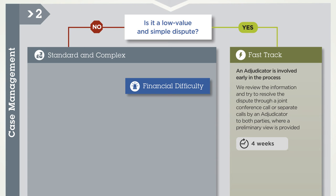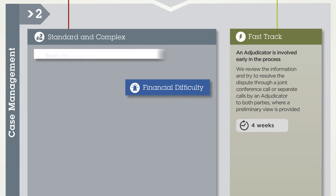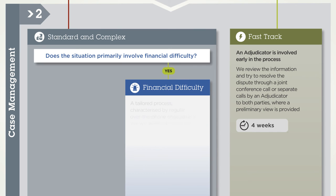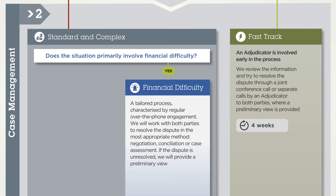If no, the dispute will move to the standard and complex stream. Does the situation primarily involve financial difficulty? If yes, the dispute will move to the financial difficulty stream — a tailored process characterised by regular, over-the-phone engagement. We will work with both parties to resolve the dispute in the most appropriate method.